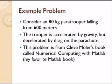So just to have an example to work on, I'm going to look at a problem where you have a paratrooper falling from a height of 600 meters. The trooper is accelerated by gravity and there's a drag force on the chute. And so the velocity of the paratrooper as he falls is governed by the balance between this gravity force and the drag force. And this came out of Cleve Moler's excellent numerical computing with MATLAB text.